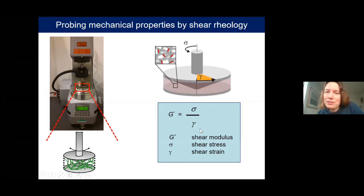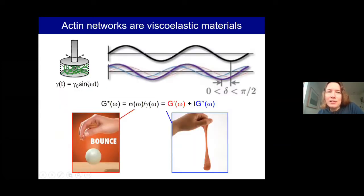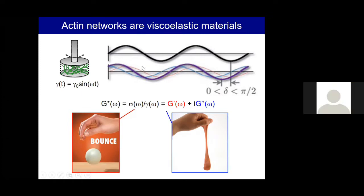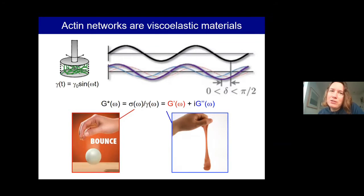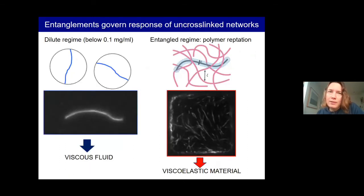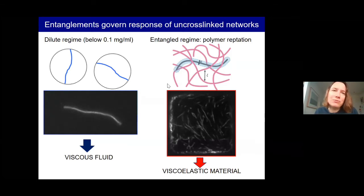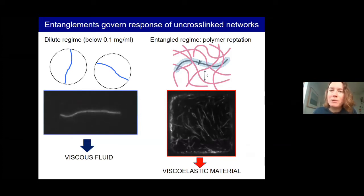These experiments are done in an oscillatory manner: we apply an oscillatory strain which results in an oscillatory stress response. By varying frequency, we can probe elastic behavior. At high oscillation frequencies, we find elastic behavior characterized by the elastic shear modulus G prime. At lower frequencies, when the material has time to relax stress, we find viscous behavior characterized by the loss modulus G double prime.